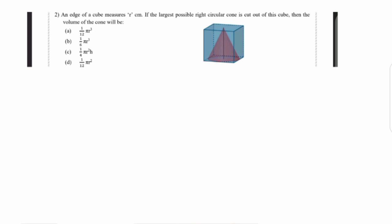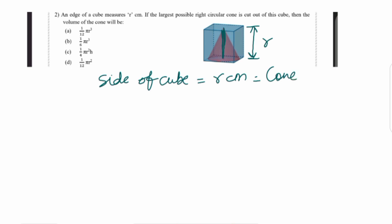Next, question number 2: an edge of a cube measures r centimetres. So the side of the cube, a, is equal to r centimetres. If the largest possible right circular cone is cut out of this cube, then the volume of the cone will be. The height of the cone equals the edge of the cube, so h = r.